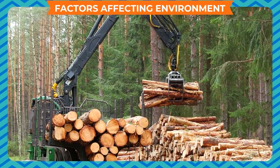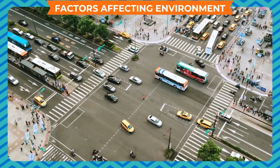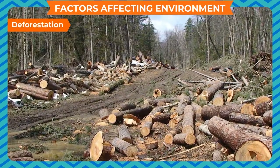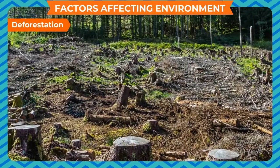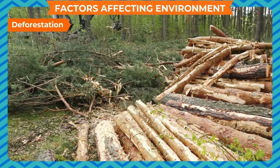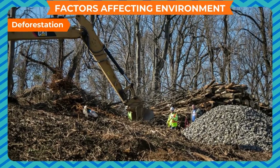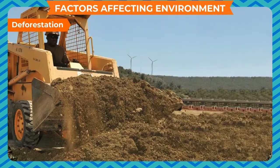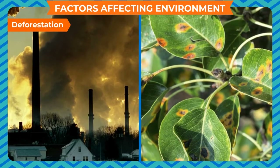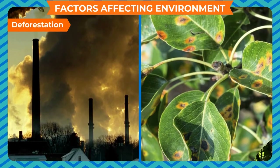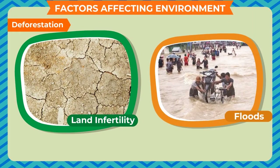Deforestation is one of the major factors responsible for environmental pollution. Excessive cutting of trees in order to build houses, buildings, and industries causes a lack of trees in the environment and soil erosion. This leads to a lack of oxygen in air, polluted air, and lack of nutrients for plants to grow. Deforestation also causes problems such as land infertility and floods.